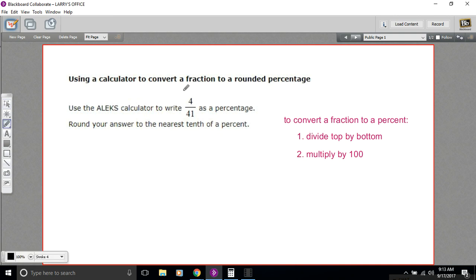First, you do the division. Every fraction really is a division problem. That's what this line means. This is 4 divided by 41. So you do that division with a calculator, and then you multiply by 100.